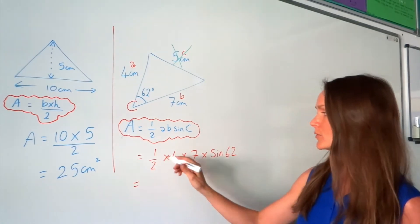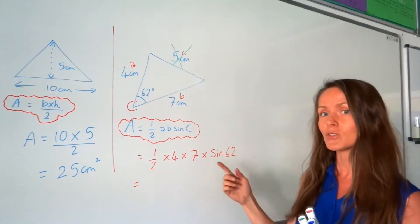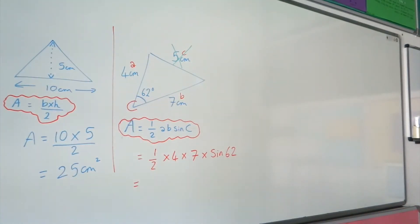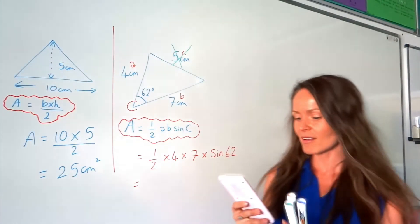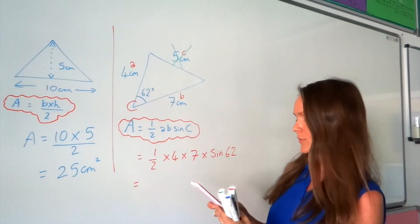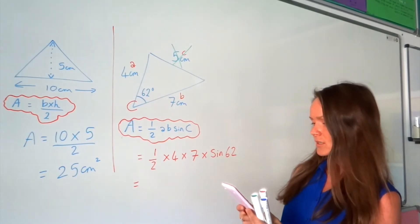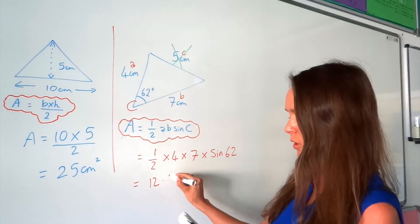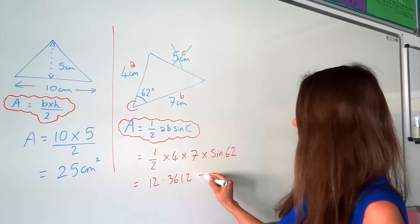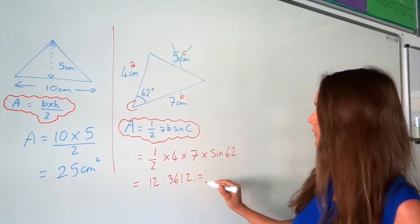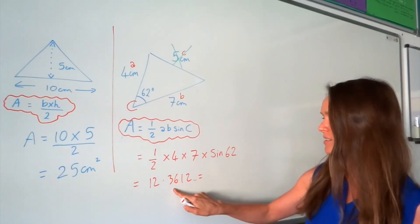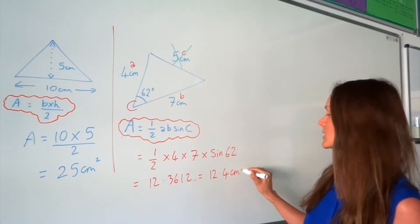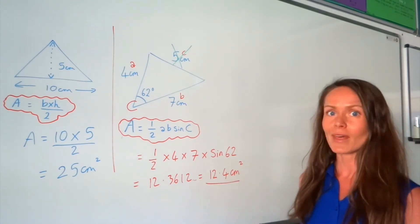That's all you have to do. Take your calculator to work this one out because you'll get a decimal answer. So a half times 4 times 7 times sine 62 is 12.3612. Rounding to three significant figures — the fourth figure, 6, rounds the 3 up to 4 — so it's 12.4, and remember the units: centimetres squared. So there's my first example of area; I'm going to do another one.